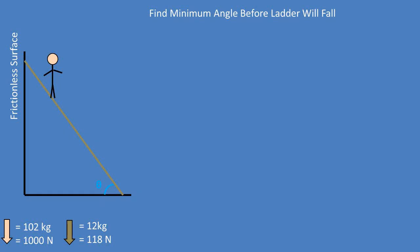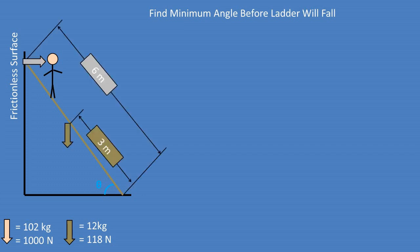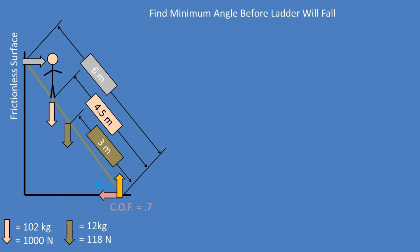In this problem, we have a person on a ladder that has a uniform mass. The center of gravity of the ladder is at the center. The ladder has a total length of 6 meters and the center of mass is at 3 meters. The mass of the ladder is 12 kilograms, so it exerts a force of around 118 newtons straight down. The person standing on the ladder is at 4.5 meters up and has a mass of 103 kilograms, exerting a force of 1000 newtons straight down. The surface the ladder rests against is frictionless, and at the base there is a coefficient of friction of 0.7. We want to find the minimum angle needed at the base to keep the ladder stable.